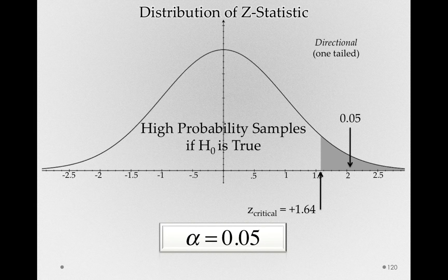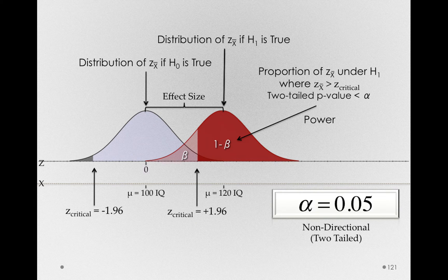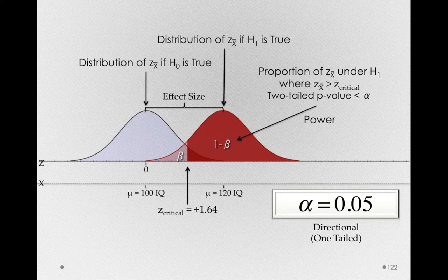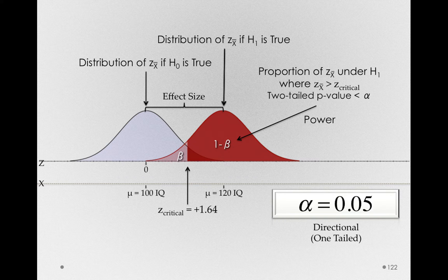Now if we look at our two-distribution diagram, notice what happens. Here we are with alpha of 0.05 using a non-directional two-tailed hypothesis that we've seen all along. I'll shift this to be a one-tailed or directional hypothesis. Notice that we're counting more of the samples under the alternative hypothesis as evidence against the null, but we're doing this in such a way that we're not changing the false alarm rate if the null hypothesis is true.